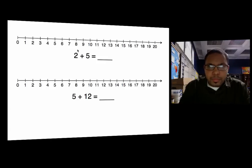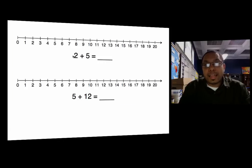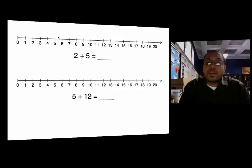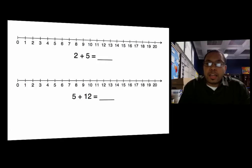The first number tells us to start at two. Two is the length from zero to two — the distance from zero to two. Six would be the length from zero to six; seven would be going from zero to seven. So for this problem, we go from zero to two, and we draw an arrow from zero to two.